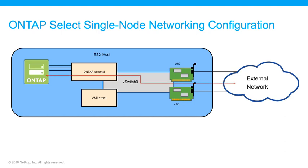Let's begin by taking a closer look at a single node ONTAP SELECT cluster. Single node clusters do not require an ONTAP SELECT internal network because there is no cluster, HA, or mirror traffic. Each ONTAP SELECT VM contains three virtual network adapters: E0A, E0B, and E0C. These ports provide management, data, and inter-cluster services.